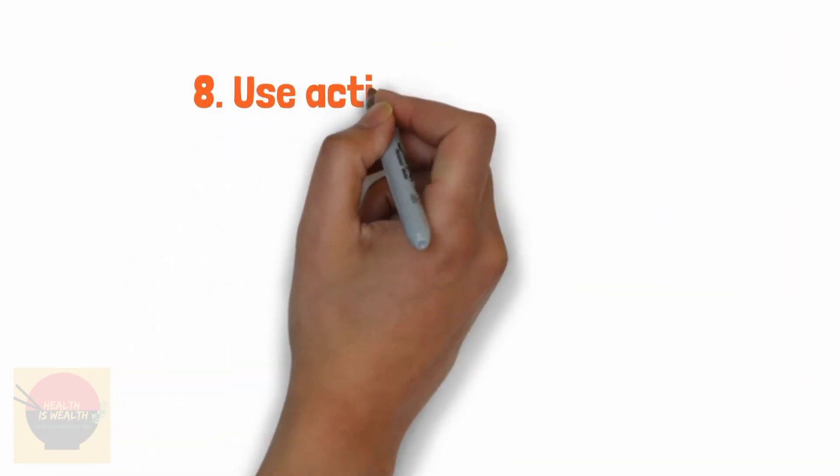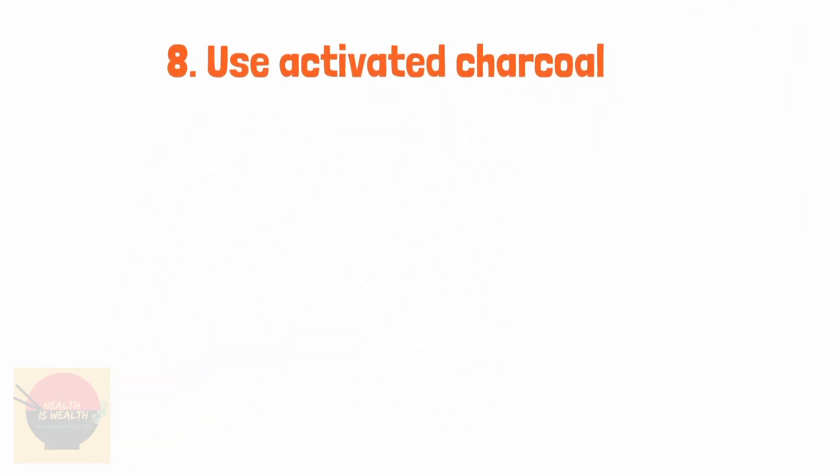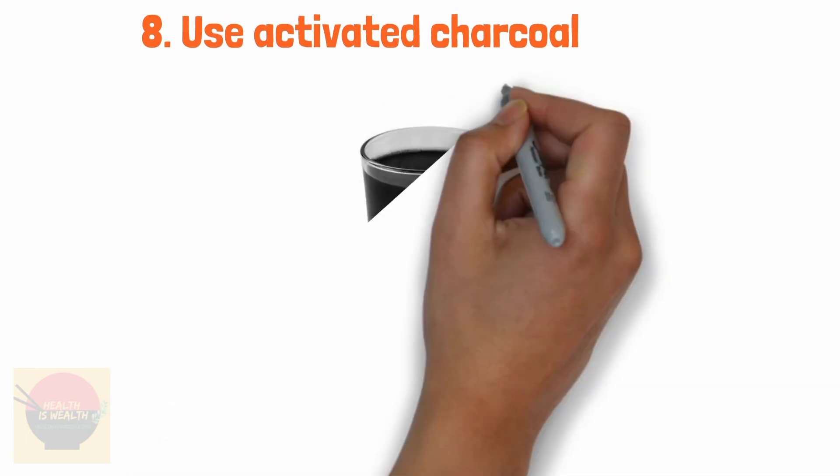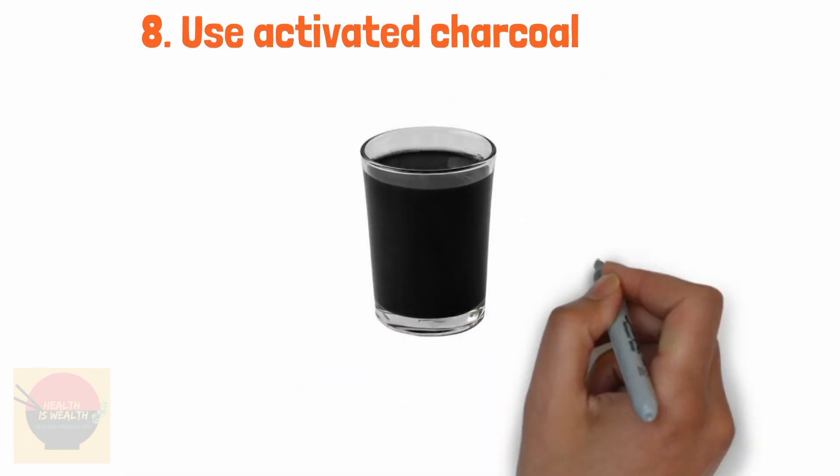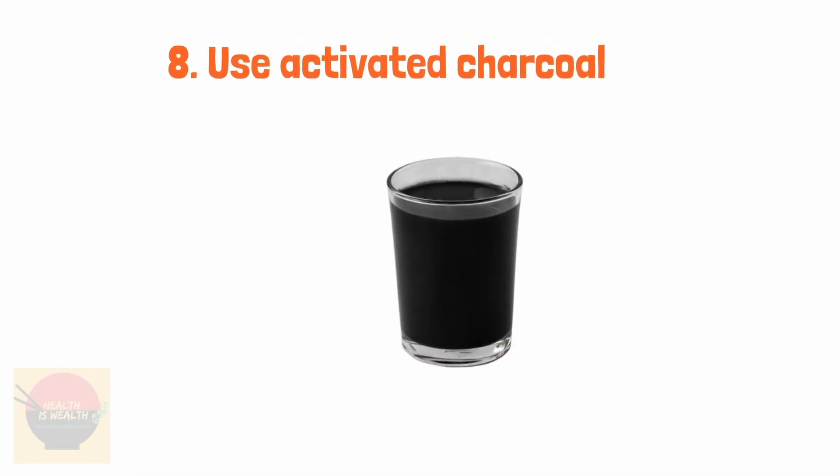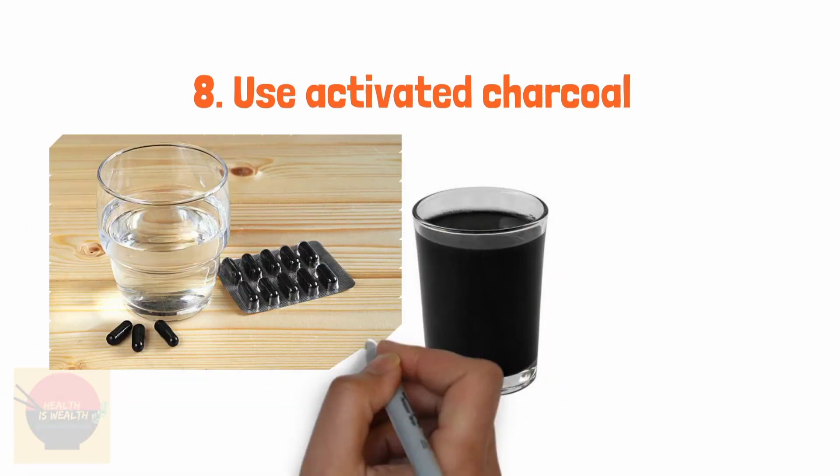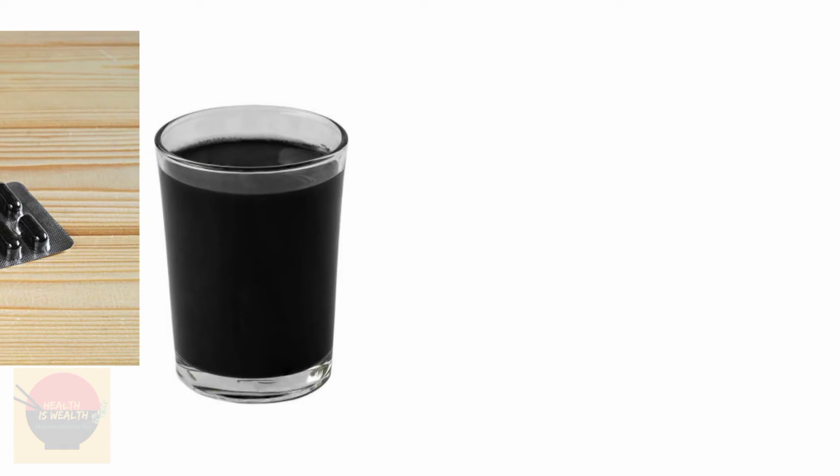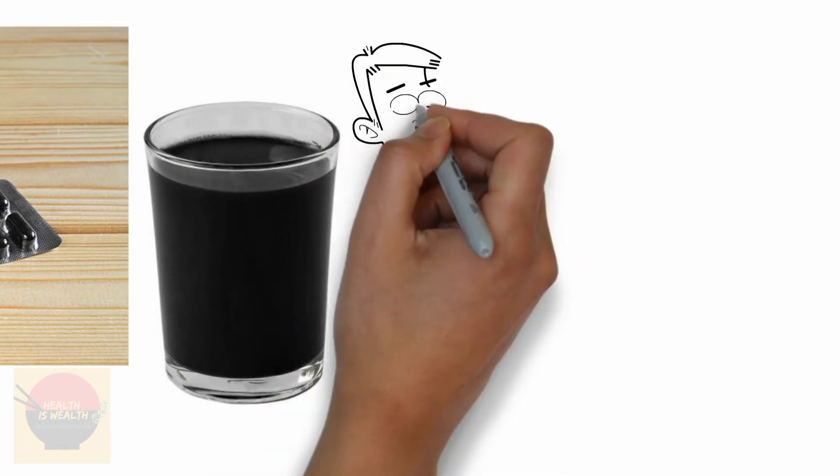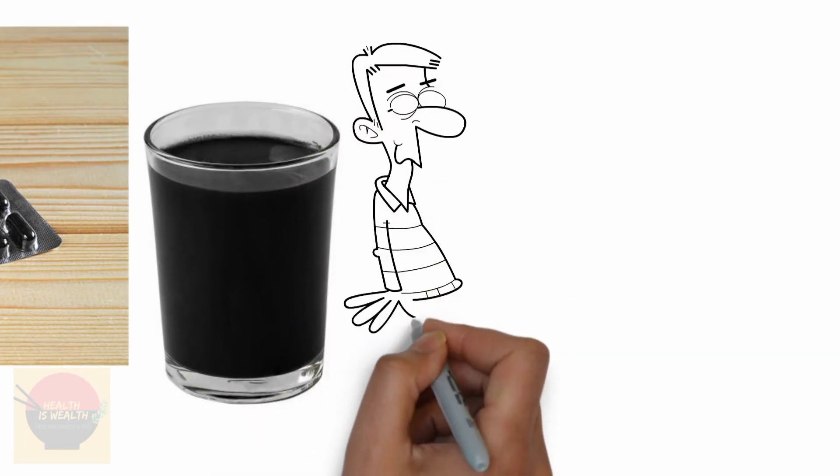8. Use activated charcoal. Activated charcoal is a natural product that can be bought in health food stores or pharmacies without a prescription. Supplement tablets taken before and after meals can prevent trapped gas. It is best to build up the intake of activated charcoal gradually.